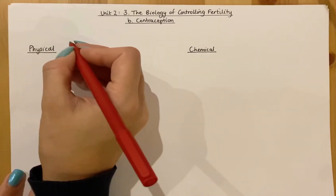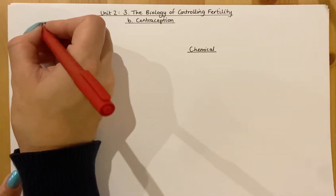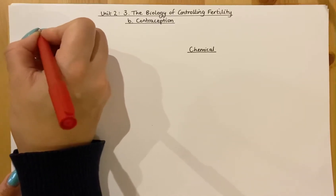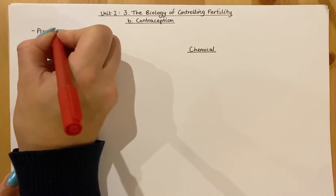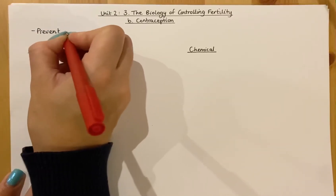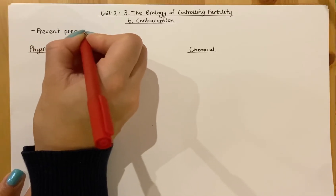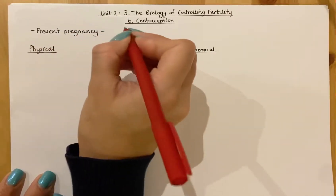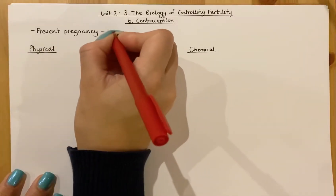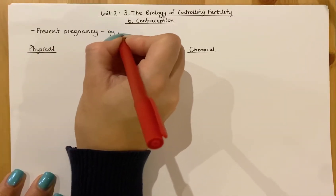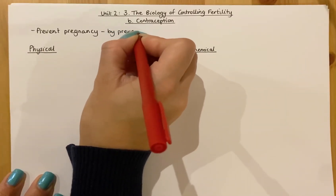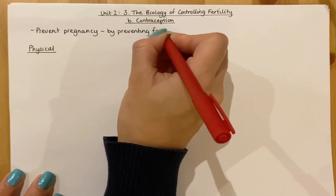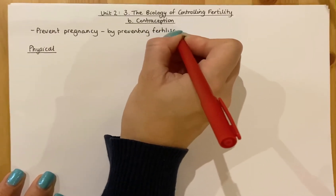First of all, you need to know the function of contraception, which is to prevent any kind of pregnancy. Pregnancy occurs when fertilization occurs, so contraception prevents pregnancy by preventing either fertilization or implantation from occurring.